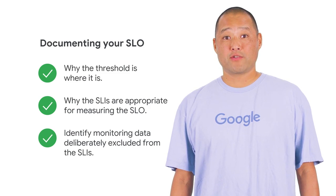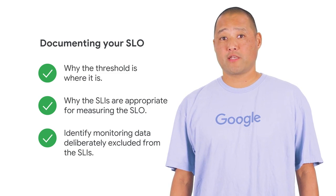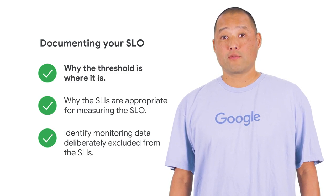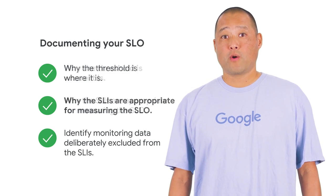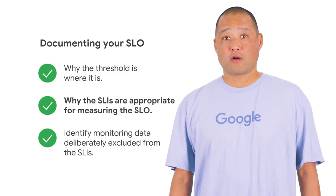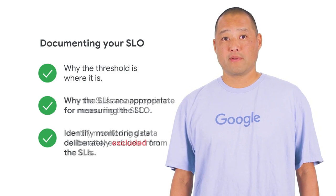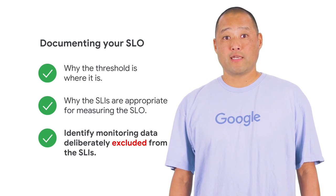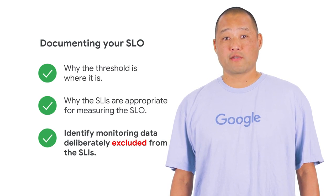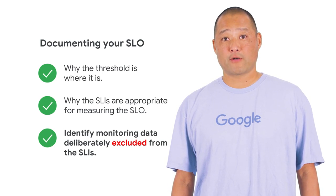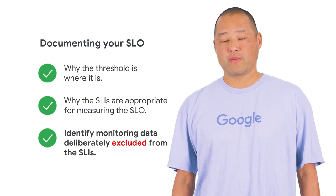We recommend your documentation includes some justification for why the threshold is where it is, why the SLIs are appropriate for measuring the SLO, and any monitoring data deliberately included or excluded from the SLIs. For example, not counting HTTP 503s as errors because they are retried by the load balancer.